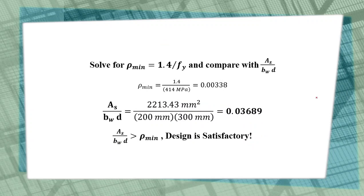Next, for ρ_min: ρ_min = 1.4 / fy = 1.4 / 414 = 0.00338. Compare it with As / (bw × d) = 2213.43 / (200 × 300) = 0.03689, which is greater than ρ_min. Therefore, the design is satisfactory. So our As = 2,213.43 mm² is acceptable.